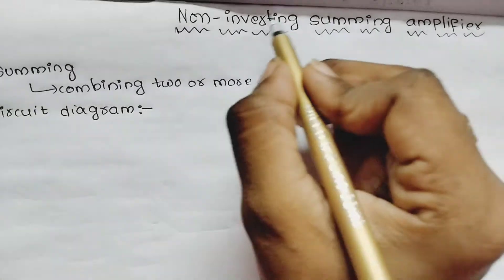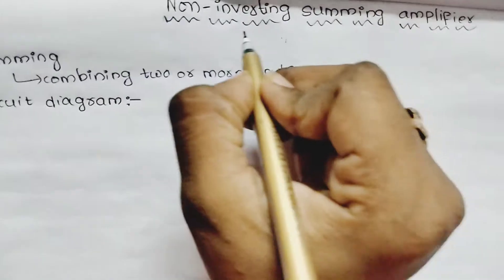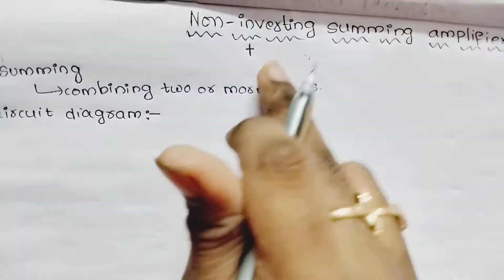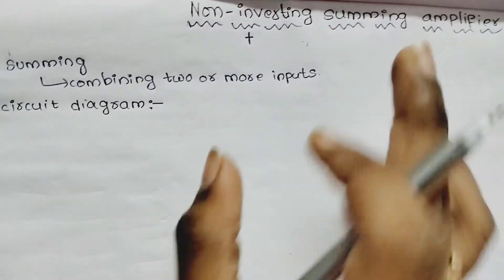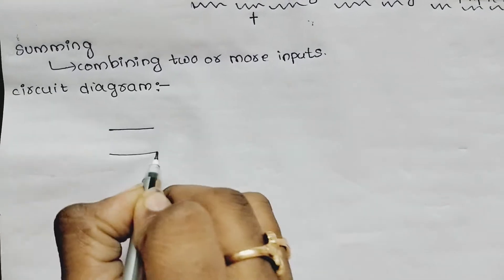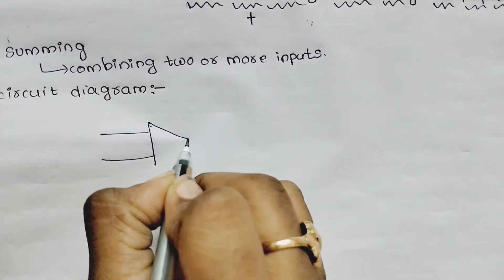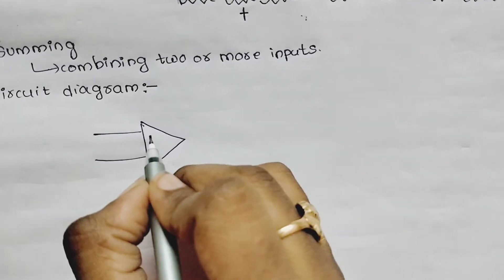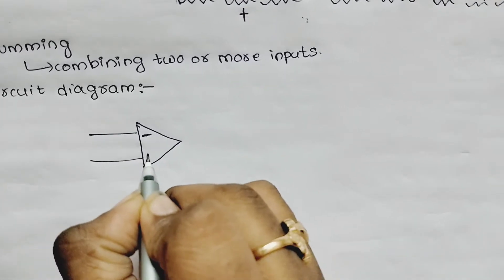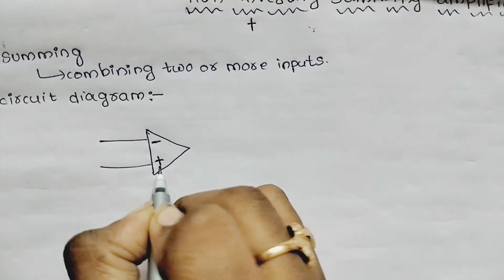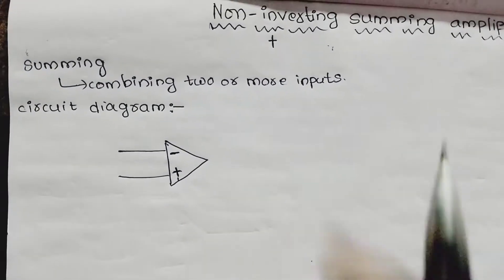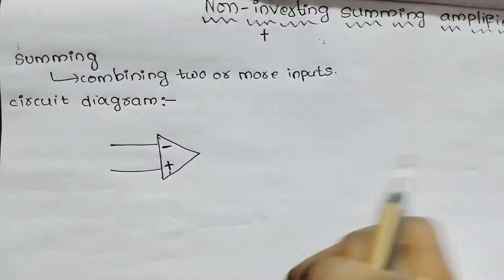As usual, we will look at the non-inverting pin. Non-inverting means plus symbol, and inverting means minus symbol. So now I will draw the normal op-amp. Here it will be our op-amp, here it will be minus and here it will be plus. So summing will be at the non-inverting pin.